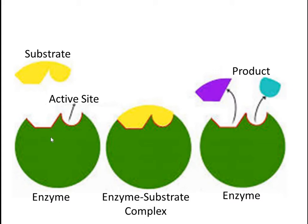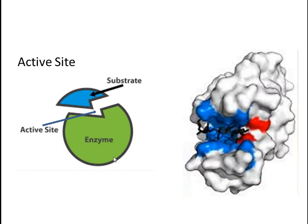That particular site on the enzyme is called the active site. The binding of substrate with the enzyme is called the enzyme-substrate complex. This enzyme-substrate complex is formed at the active site and ultimately the substrate will convert into product. When the substrate converts into product, the structure of the enzyme will remain the same as earlier. The active site on the enzyme has specific amino acid sequences which help the enzyme to bind with the substrate. Only a very small region of the entire enzyme is acting as the active site, providing a microenvironment for the enzymatic reaction.